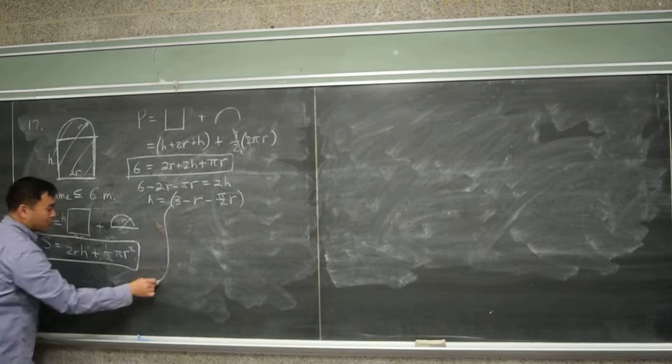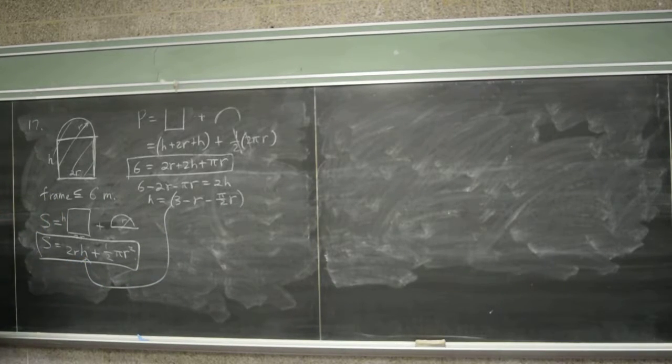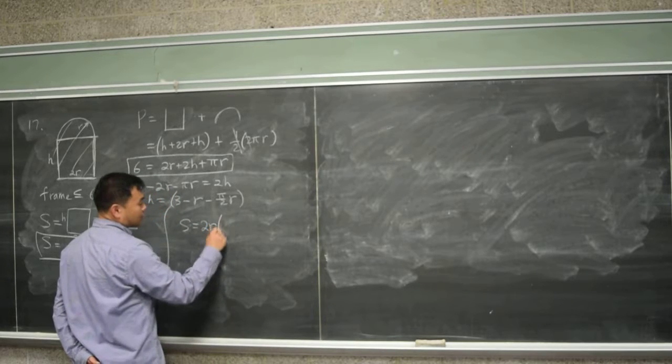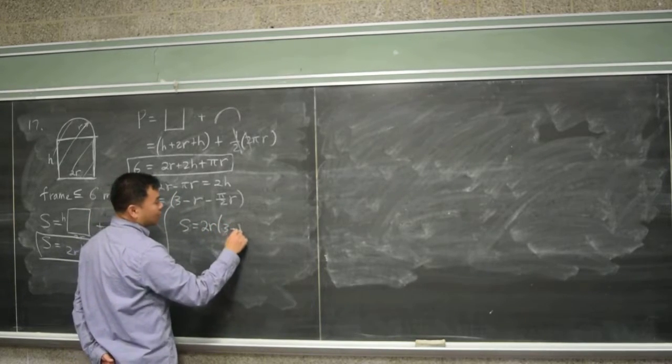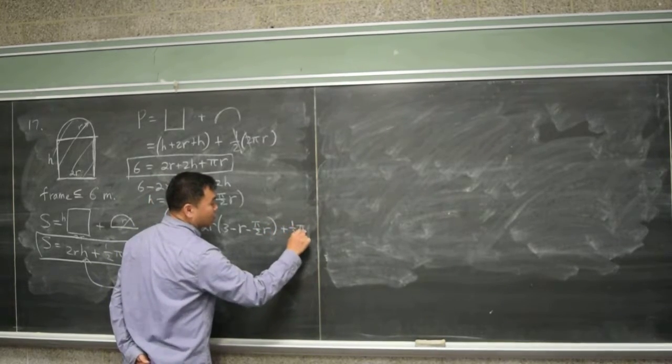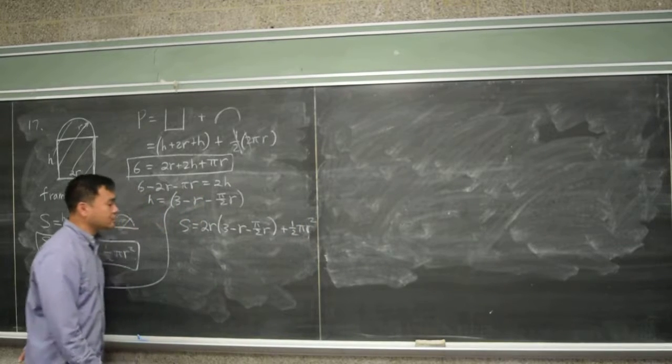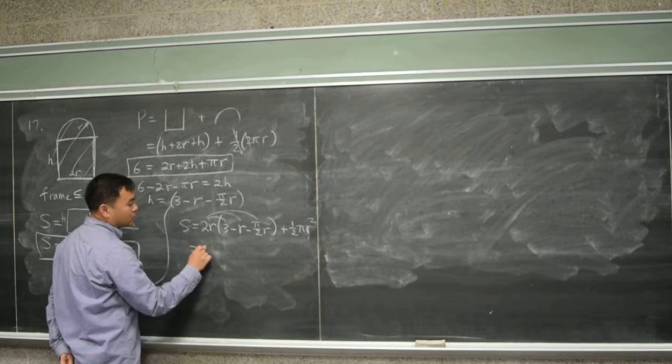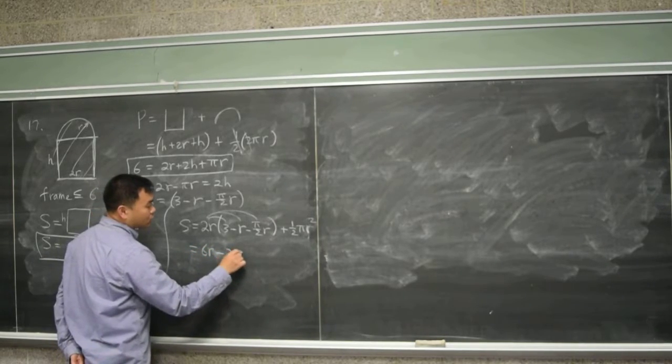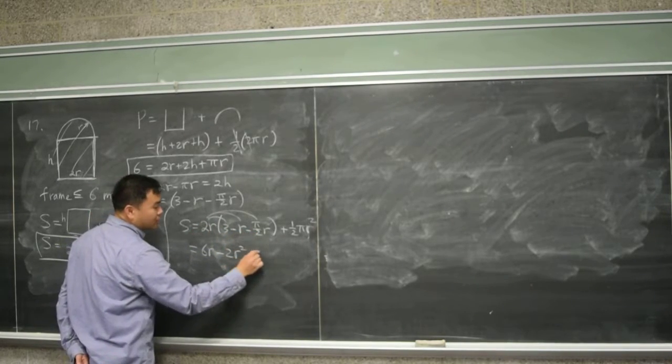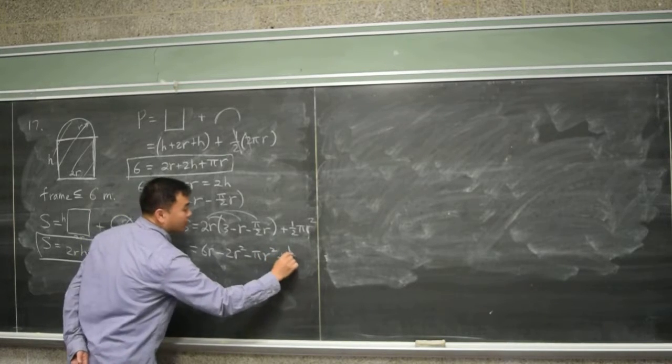What do you do after this? Plug it back into your objective function so that objective function becomes a function of a single variable. And let's see. So S is now 2R times three minus R minus pi over 2R. And then plus one-half pi R squared. Let's simplify this by multiplying things out. So you have 6R minus 2R squared. Two over two is... two cancels so it's minus pi R squared. And then plus one-half pi R squared.